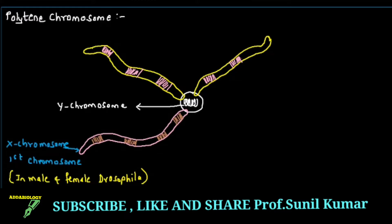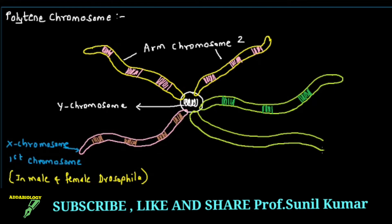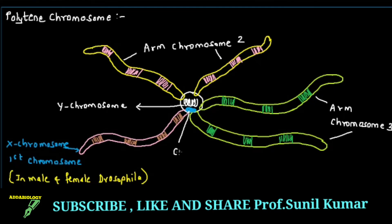These two arms are chromosome number 2. Now I draw arm chromosome number 3 — all these parts I am drawing represent the different chromosomal arms. Since there are many DNA strands present together, they form a polytene chromosome. Then chromosome number 4 is drawn inside. The size of the chromosome is 300 times larger, and there is endoreplication of chromatids taking place with no cell division.